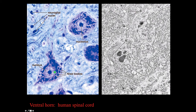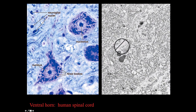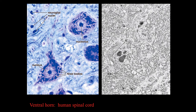The Nissl bodies are clumps of rough endoplasmic reticulum. At the electron microscopic level you can see mitochondria, lots of rough ER, some profiles of Golgi, and if you look very carefully on the electron micrographs, cross-sectional profiles of microtubules. Neurons have lots of microtubules, and that's necessary for the vesicular transport of organelles down the axon.